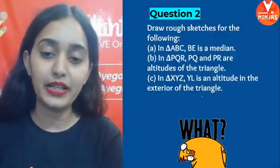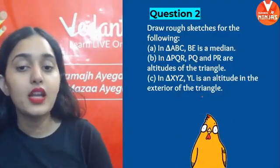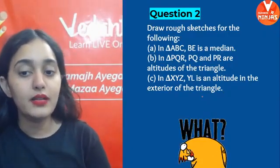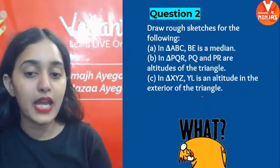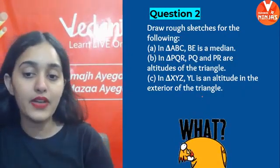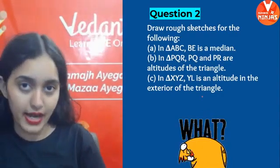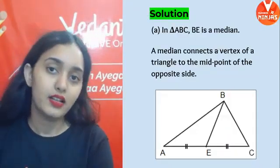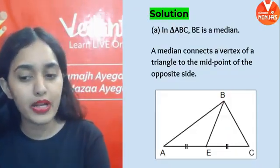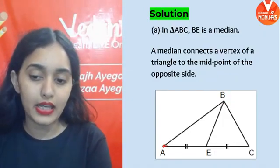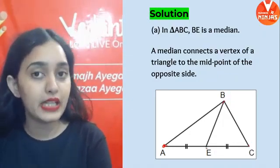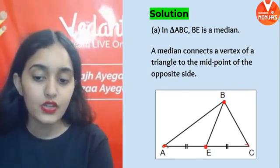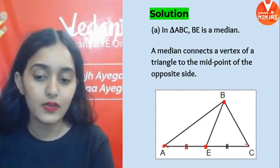Next question: Draw rough sketches for the following. In triangle ABC, BE is the median. That means from B to E, we draw a line and E should be the midpoint of the opposite side. Draw triangle ABC, then draw BE as the median — so AE will be equal to EC.